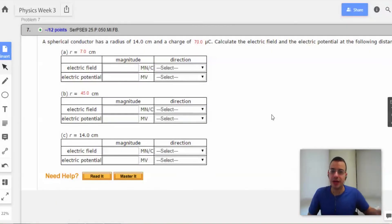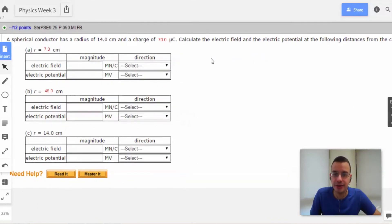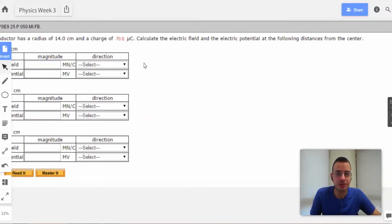Problem 7. A spherical conductor has a radius of 14 centimeters and a charge of 70 microcoulombs. Calculate the electric field and the electric potential at the following distances from the center.